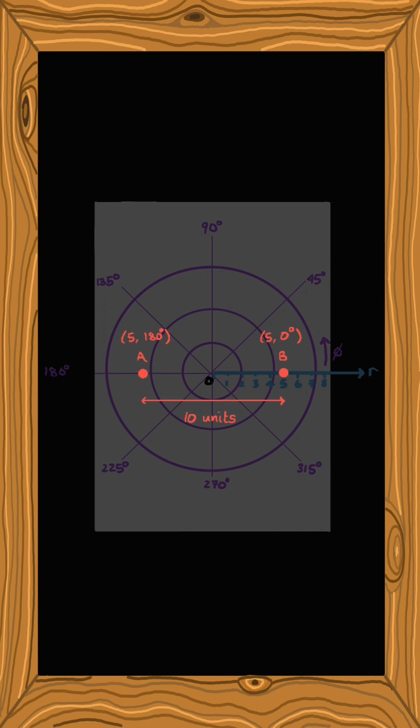But the problem comes when we try to do this at the origin, r equals 0. But what's the phi value? This particular coordinate system works perfectly everywhere on our piece of paper, except for wherever we put the origin.